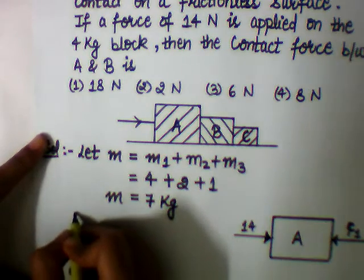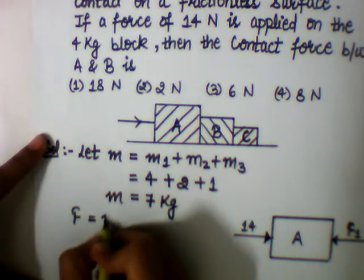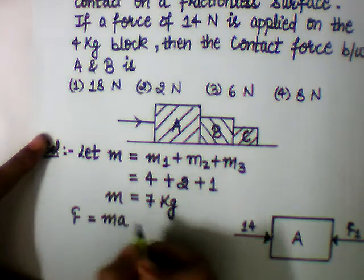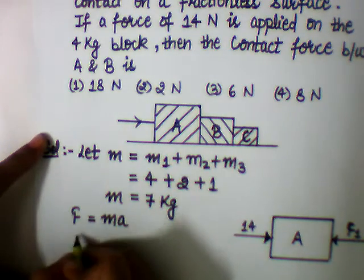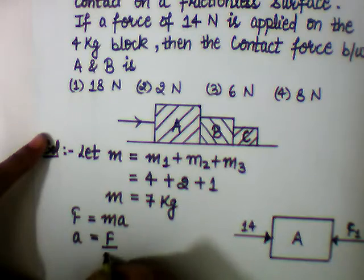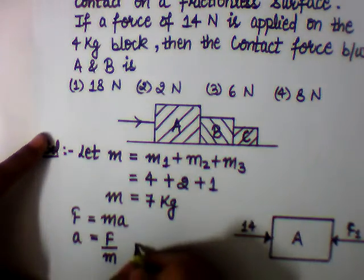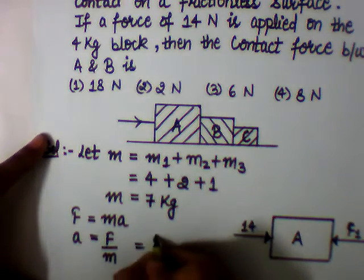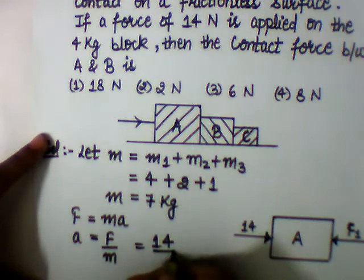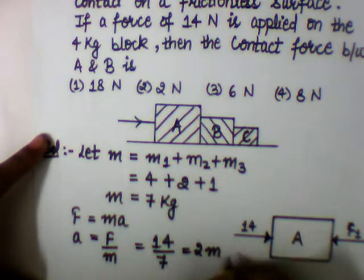As we know that F equals to MA, that is force equals to mass into acceleration. So acceleration equals to force over mass. Putting the values: 14 by 7, that is 2 meter per second square.